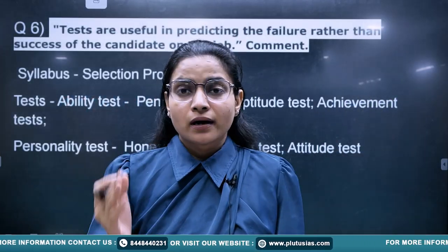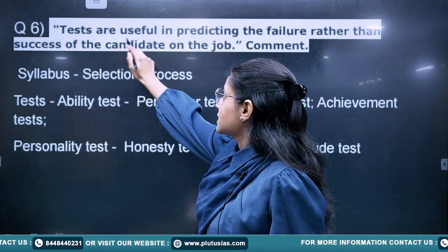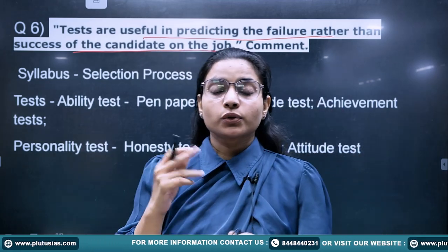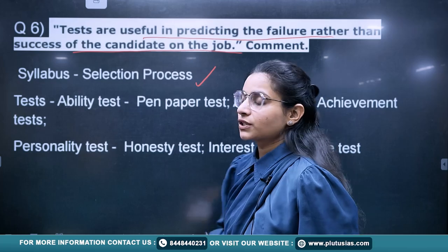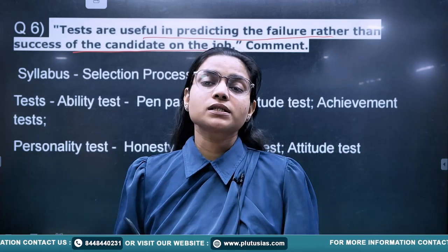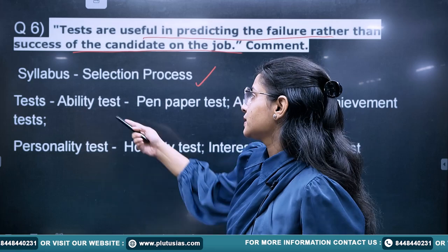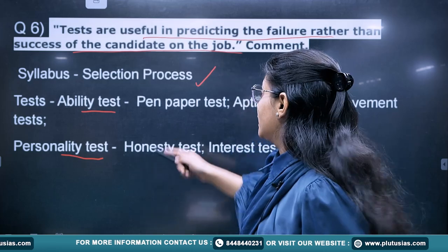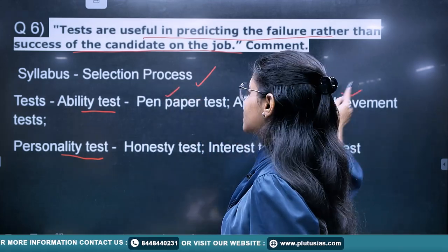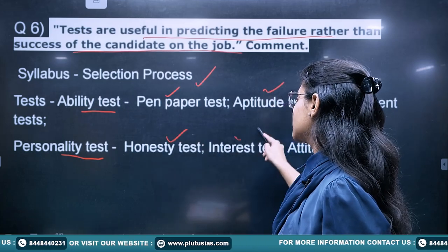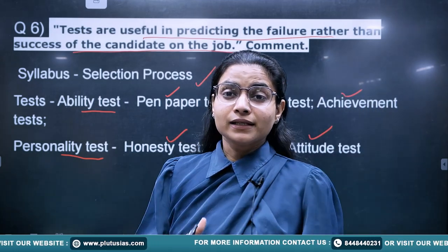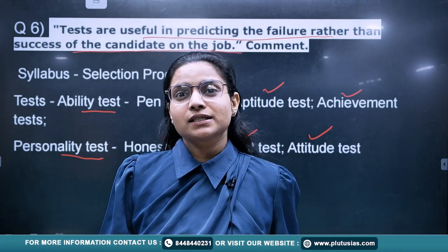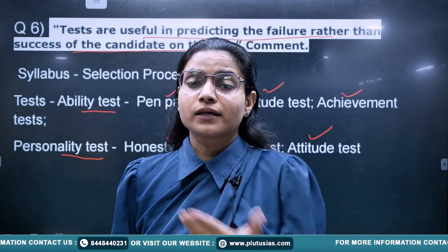Question number 6 states: HRM tests are useful in predicting the failure rather than the success of the candidate on the job. To relate this to the syllabus, it is written as the selection process, which includes various types of selection tests — ability tests such as pen-and-paper, aptitude, and achievement tests, and personality tests such as honesty, interest, and attitude tests.